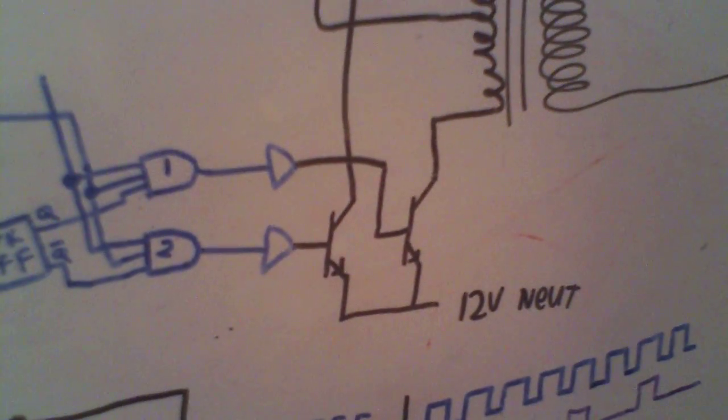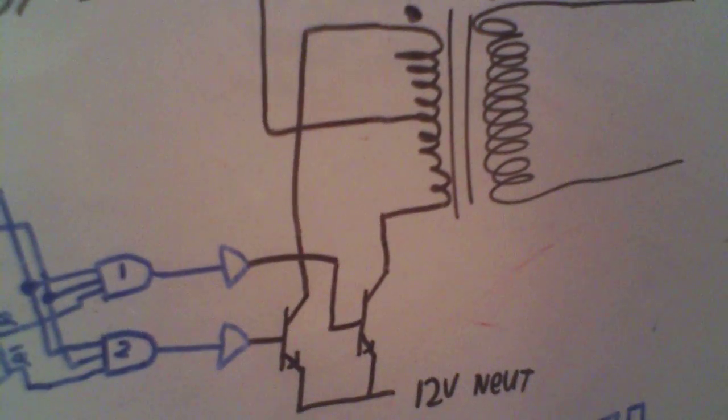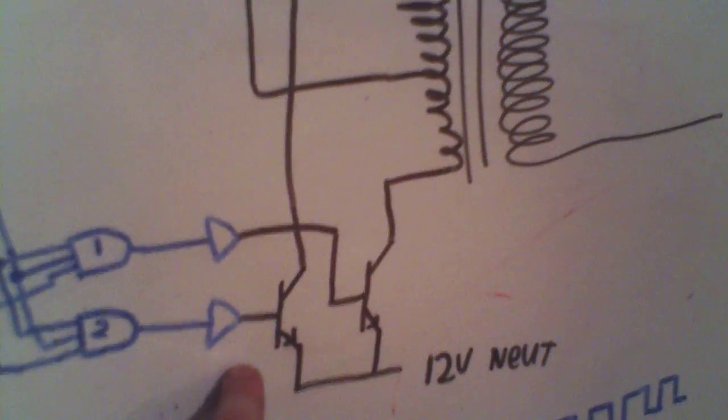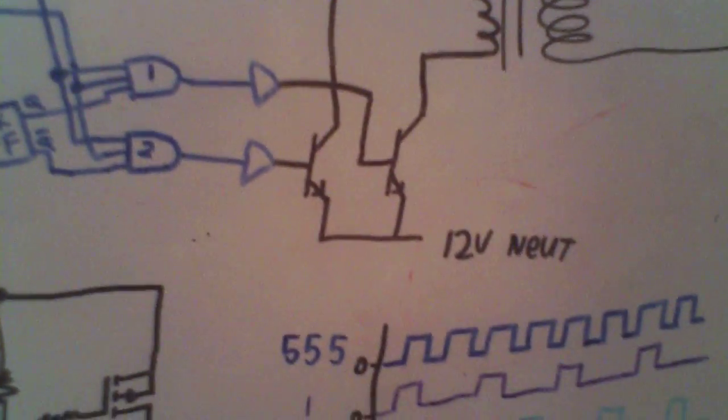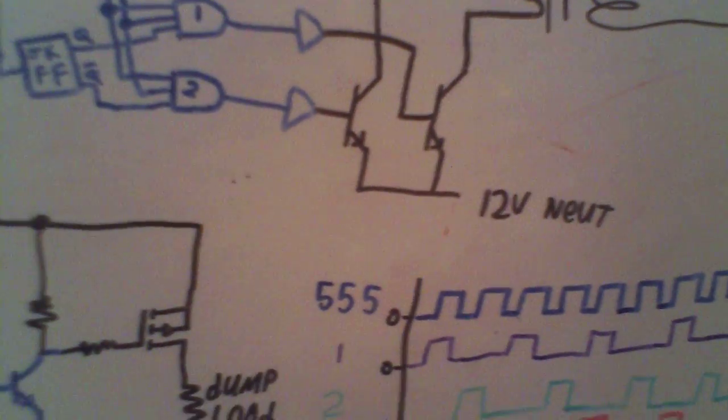A couple of BJTs, because in this application, because switching speed isn't super critical. Because this thing is only going to be operating at about, each one of these is only going to be operating at about 60 cycles per second to 100 cycles per second. Switching speed isn't really super critical. And for switching applications like this, BJTs have lower losses than MOSFETs.